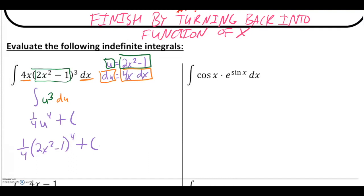Consider that if you take the derivative again, chain rule applies — the 4 and the one-fourth cancel, and you end up with 2x squared minus 1 to the third times the derivative of the inside, 4x, which matches the original integrand.